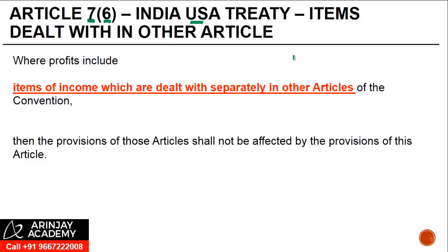What Paragraph 6 does is it lays down that if there are certain items of profit which are dealt with in other articles, then those provisions will not be impacted by the general provision of Article 7, where profits include items of income which are dealt with separately in other articles of the convention.